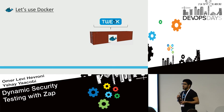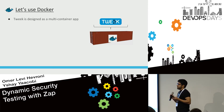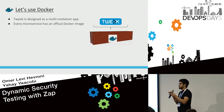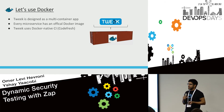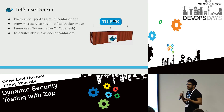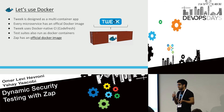We're going to use Docker. Tweak is designed as a multi-container app, and each microservice has an official Docker image. Our CI is completely Docker-native, and our test suites are Docker processes. The good thing about ZAP is that it has an official Docker image too — so we don't care that it's written in Java or whatever, it's just Docker. Everything is containerized.